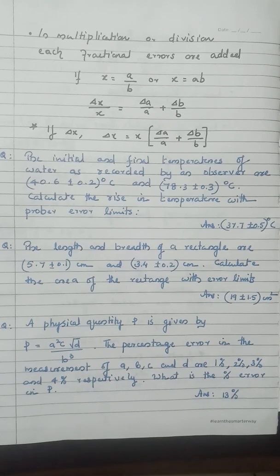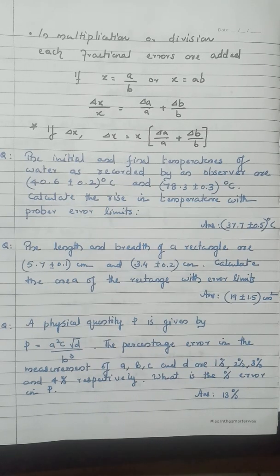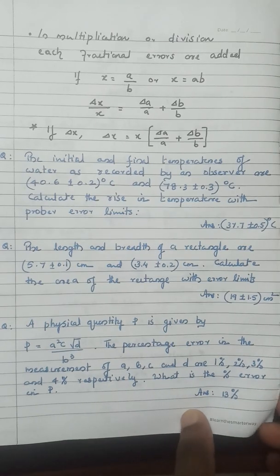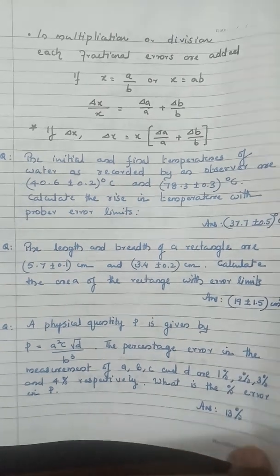Another important question: a physical quantity P = a²c√d / b³. Given percentage errors in a, b, c, d, find the percentage error in P. Since the function involves multiplication and division, the percentage error in P equals 2×(% error in a) + (% error in c) + ½×(% error in d) + 3×(% error in b).